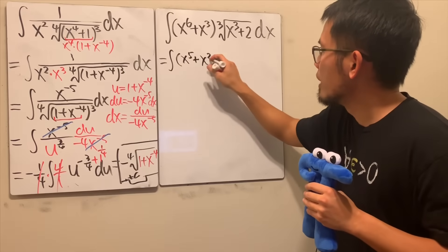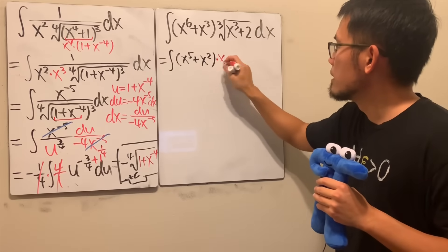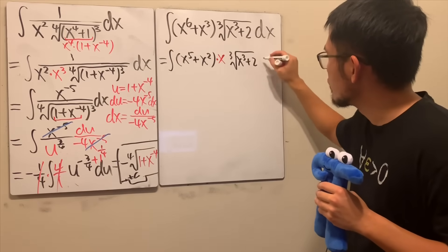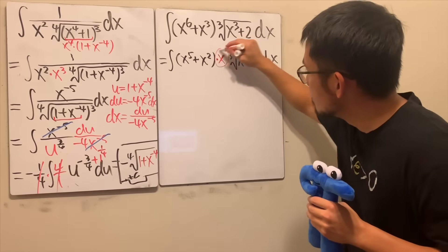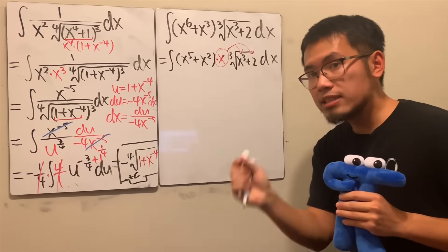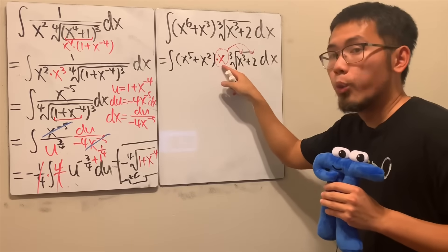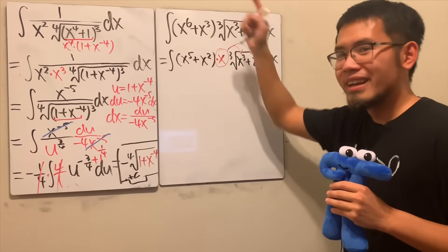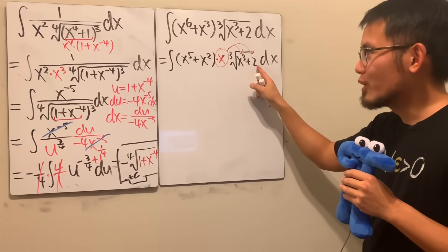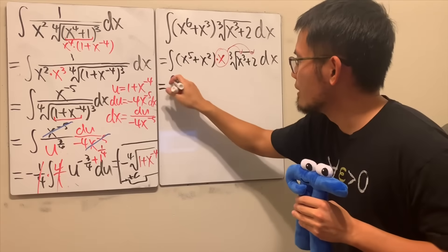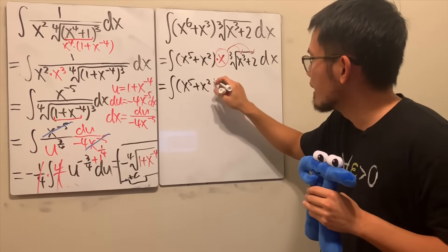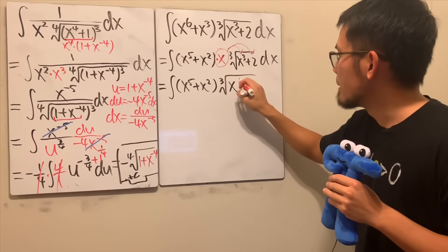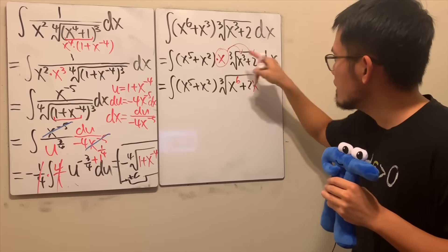The derivative of x to the third power is just 3x squared, but we have x to the sixth — that's not enough. So I'll write this as x to the fifth plus x squared, multiplied by x, factoring out an x. We still have x cubed plus 2 inside the cube root. Bringing that x inside the cube root makes it x to the third power, times the existing terms — that gives us x to the sixth. It works similarly! So the integral becomes x to the fifth plus x squared, times the cube root of x to the sixth plus 2x to the third.